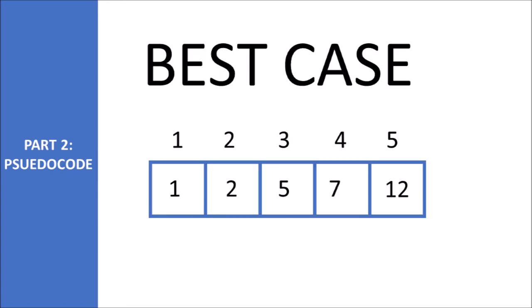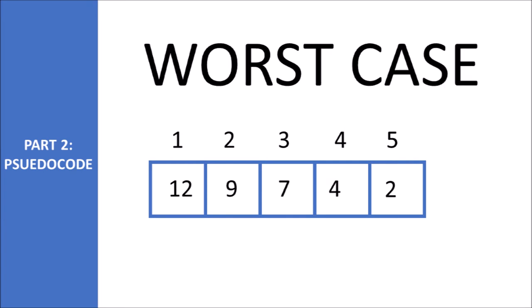First, let's find the number of swaps in the best case. The best case is that the array is already sorted. Remember, we make swaps when a value is bigger than the value to its right. This will never happen if the array is sorted, which means there will be zero swaps in the best case. Now let's consider the worst case.